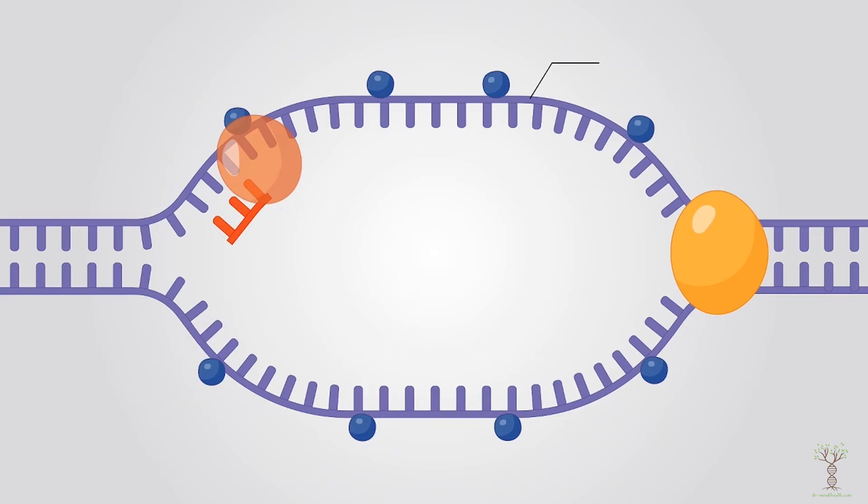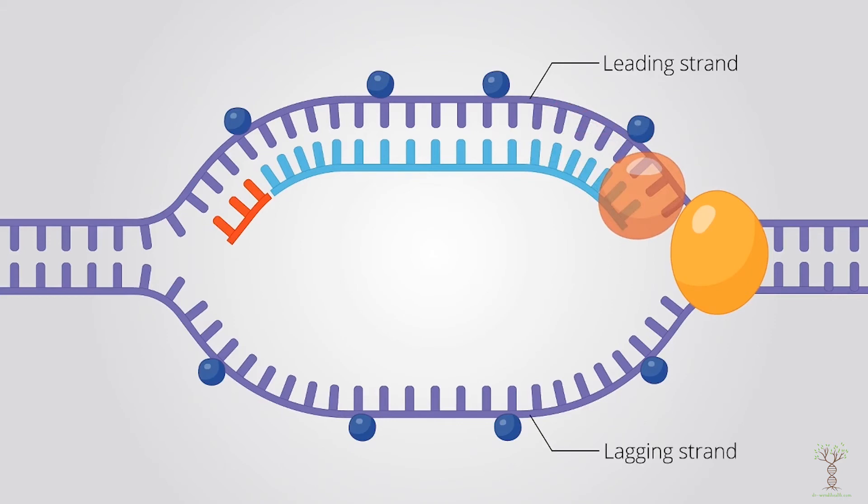So this top strand is going to be called the leading strand and the polymerase can continue replicating from that first primer and it can just keep following the movement of the helicase. Whereas the opposite strand is called the lagging strand and it has to be replicated in segments called Okazaki fragments. So the primase will add a primer and then the polymerase can add the nucleotides in the five prime to three prime direction.